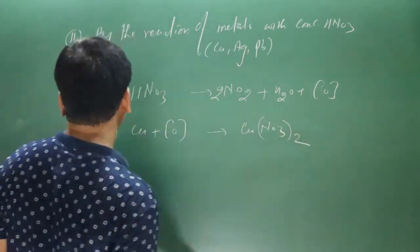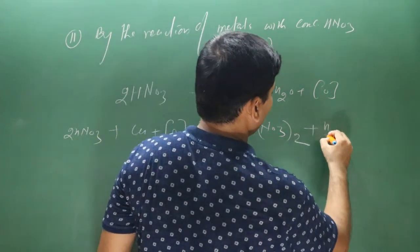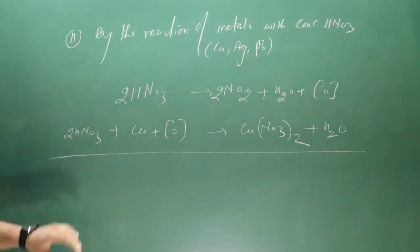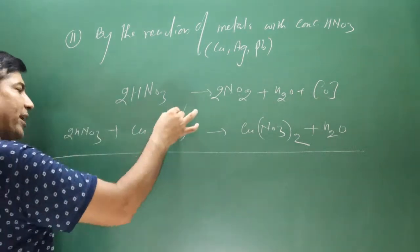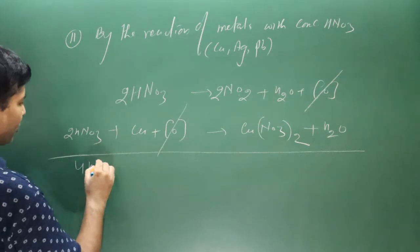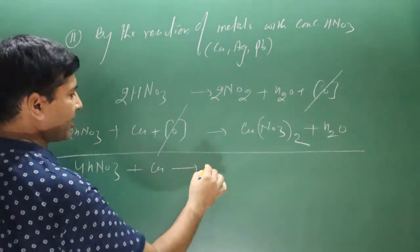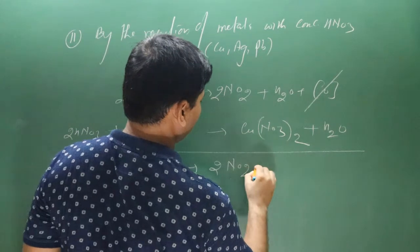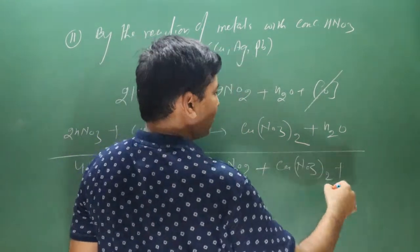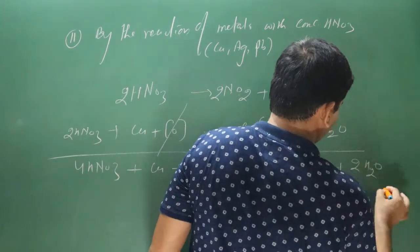Two hydrogen atoms combine with nascent oxygen to form a water molecule. Adding both equations and cancelling nascent oxygen, we get four molecules of nitric acid reacting with copper, giving two molecules of nitrogen dioxide, copper nitrate, and two molecules of water.